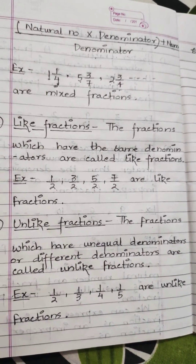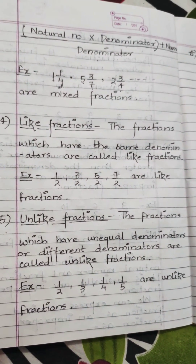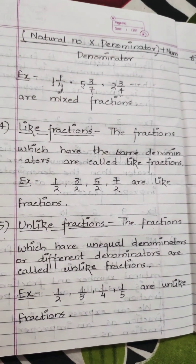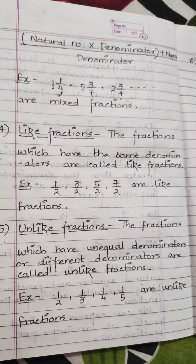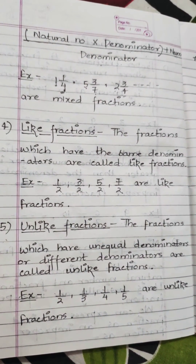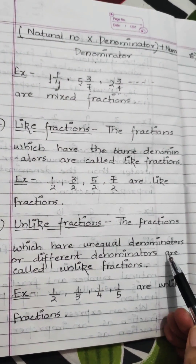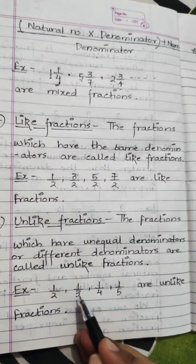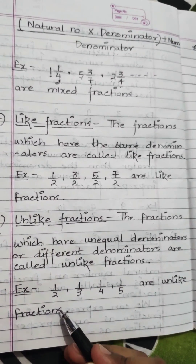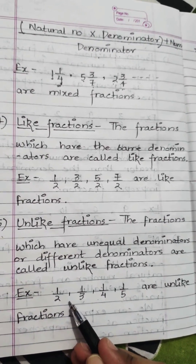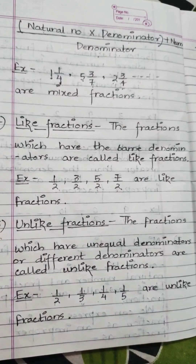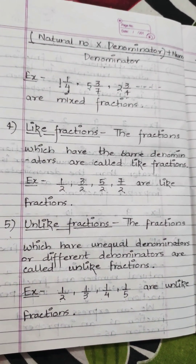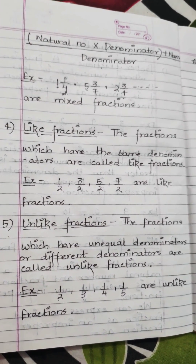Unlike fractions are fractions which have unequal or different denominators — they are the opposite of like fractions. For example: 1 upon 2, 1 upon 3, 1 upon 4, and 1 upon 5 are unlike fractions, because the denominators 2, 3, 4, and 5 are all different. So these are all the types of fractions. One more type will be discussed when we start the exercises. Thank you, that's all for today.